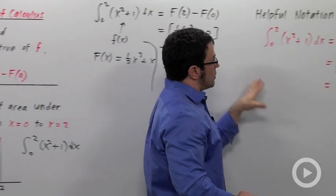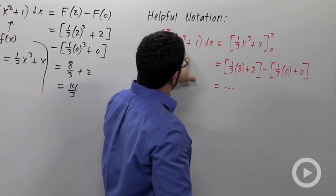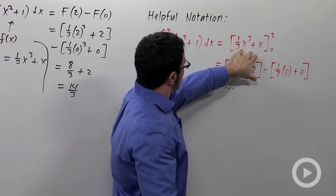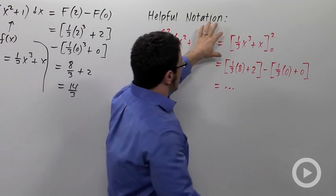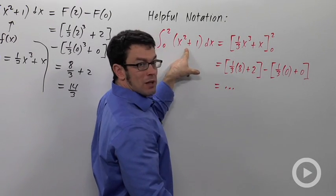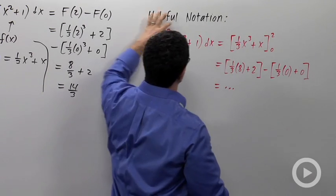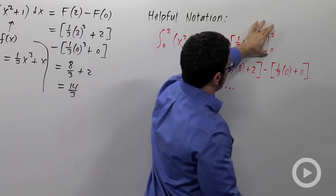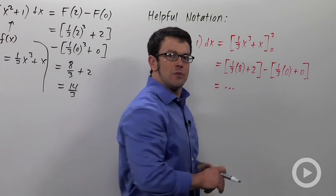Now here's some helpful notation. When you're using the fundamental theorem of calculus, you often want a place to put the antiderivative. So sometimes people will write a set of brackets, write the antiderivative they're going to use for x squared plus 1, and then put the limits of integration, the 0 and the 2, right here. And then just evaluate as we did.